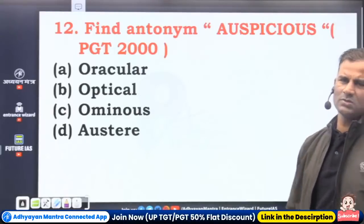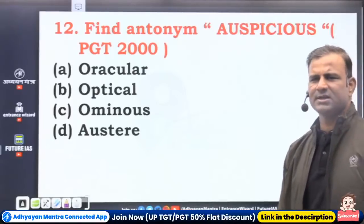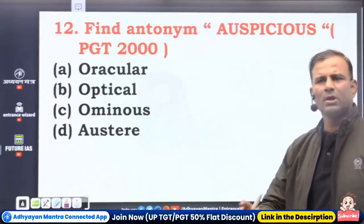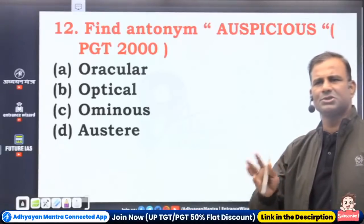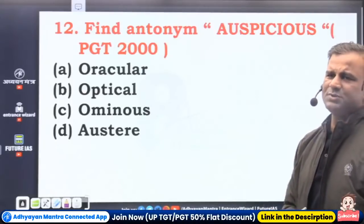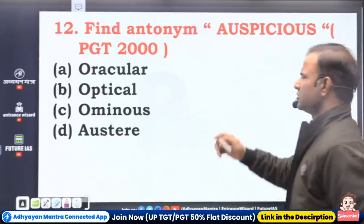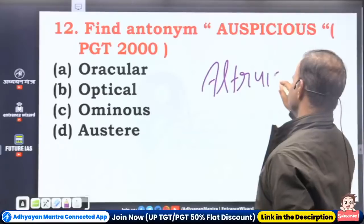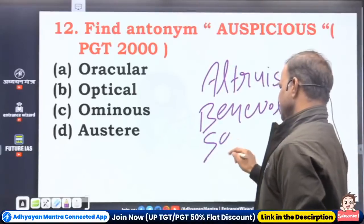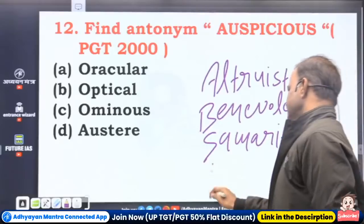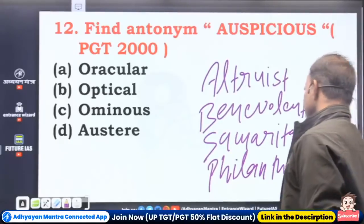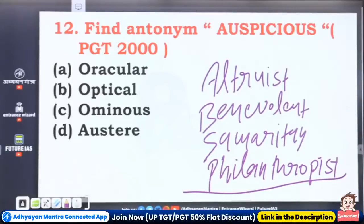Auspicious — TGT 2000, find the antonym. Altruist synonyms include benevolent, samaritan, philanthropist — these are words for a good person. Auspicious occasion means very propitious, congenial — in Hindi, anukool. Synonyms for altruistic: benevolent, samaritan, philanthropist. These are basically synonyms for a 'nek aadmi' — a good person.